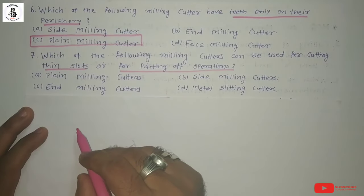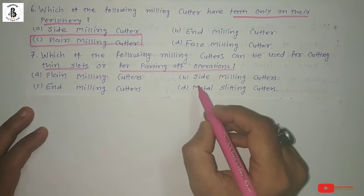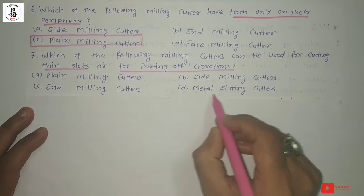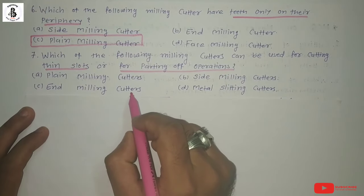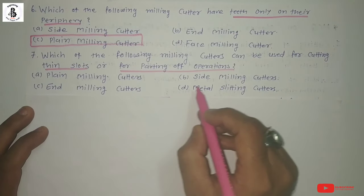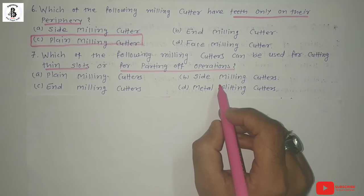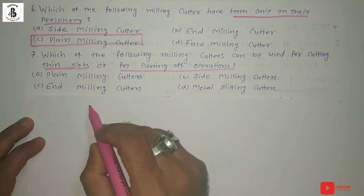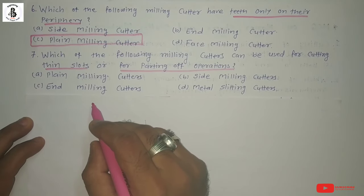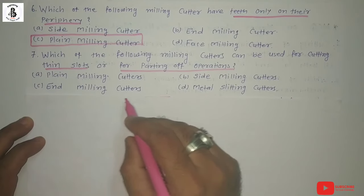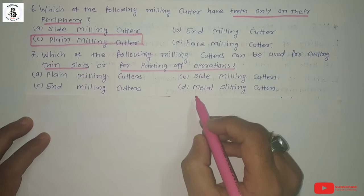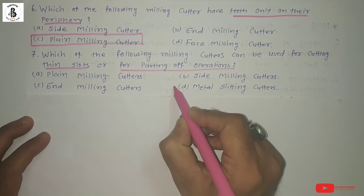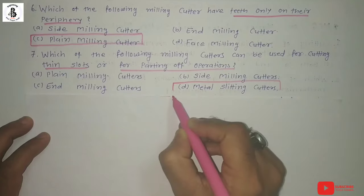Next: Which of the following milling cutters can be used for cutting thin slots or for parting operations? Option A: plain milling cutter, option B: side milling cutter, option C: end milling cutter, option D: metal slitting cutter. Plain milling cutters make flat surfaces; side milling cutters work on one face of the job; end milling cutters make slots and gear mechanisms with indexing. Metal slitting cutters are used for cutting thin slots or parting operations. So the right answer is option D: metal slitting cutter.